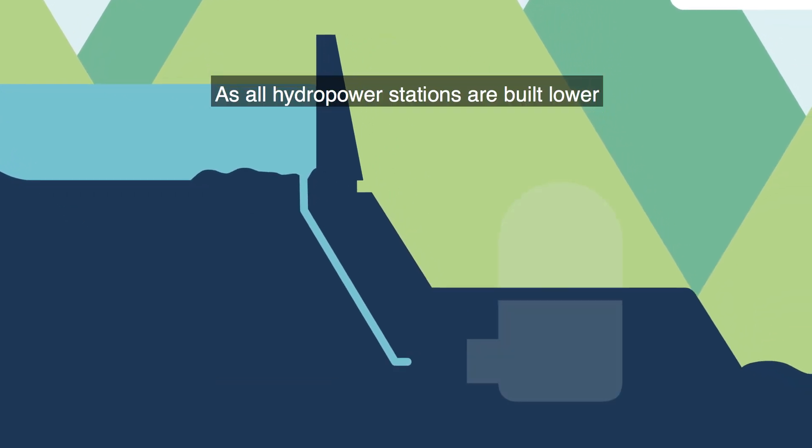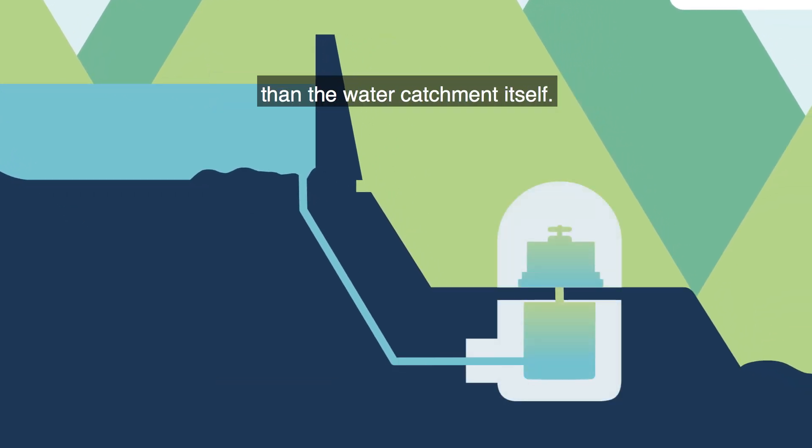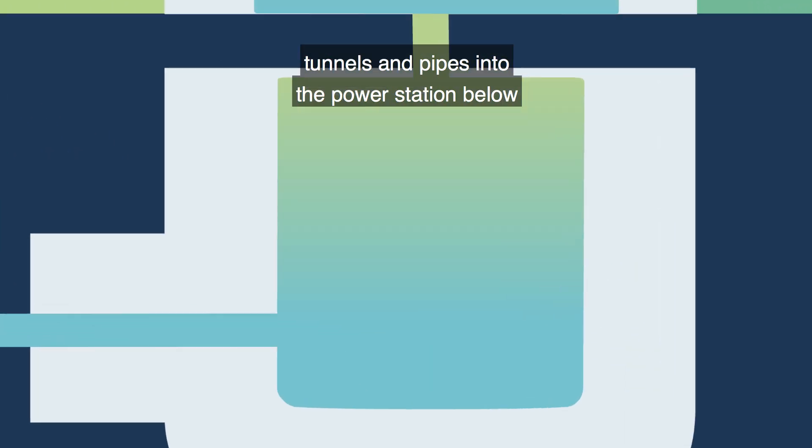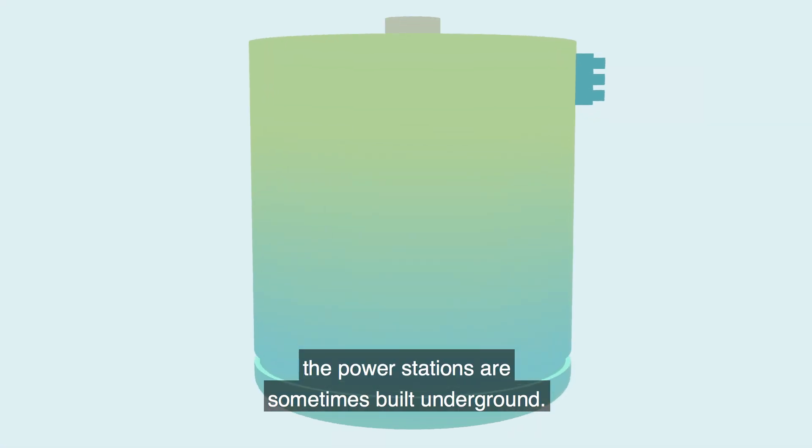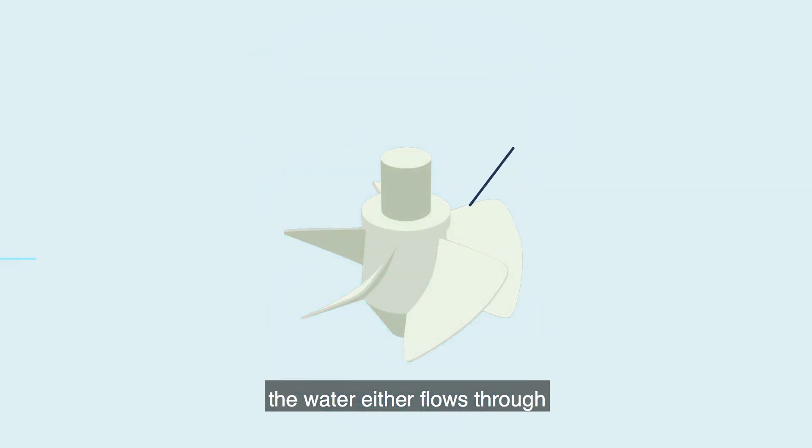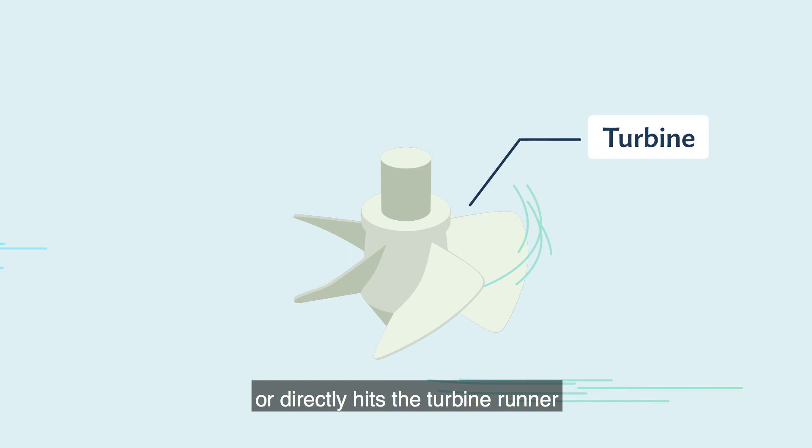As all hydro power stations are built lower than the water catchment itself, the water is directed by a combination of canals, tunnels and pipes into the power station below. The power stations are sometimes built underground. Depending on the type of turbine, the water either flows through or directly hits the turbine runner and causes it to spin.